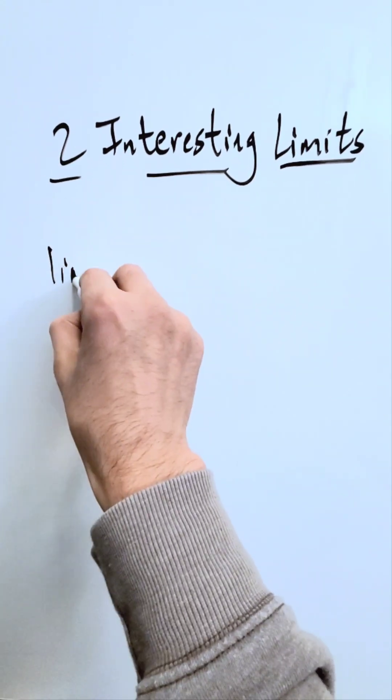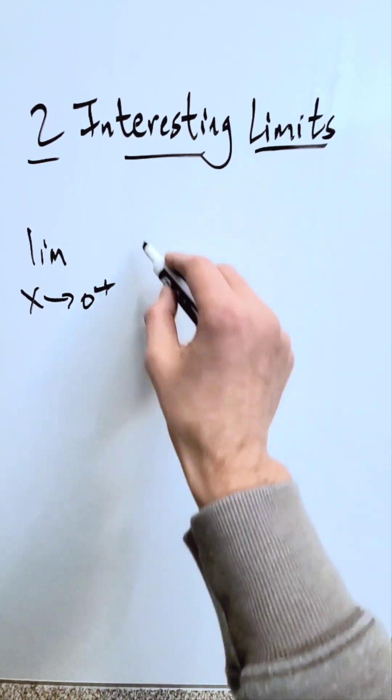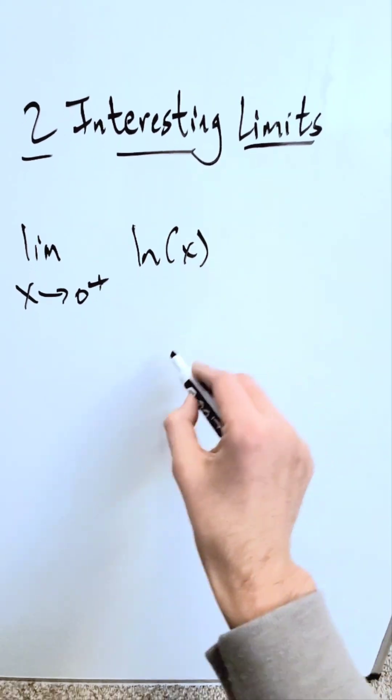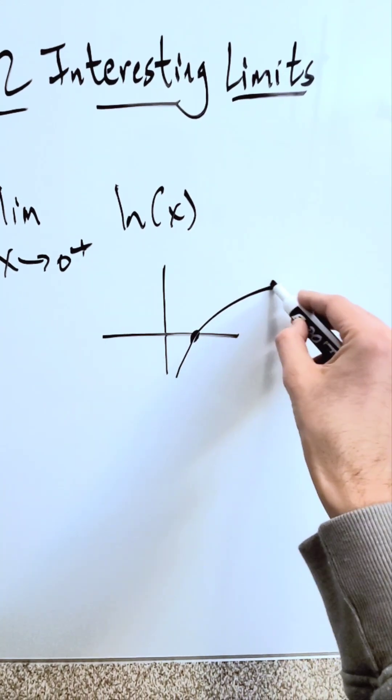The first one, many of us are familiar with this, limit as x approaches 0 from the right. Values of x, 0 from the right, that function being natural log x. If you graph this, you know it's 1, 0 x intercept and the function looks like this.